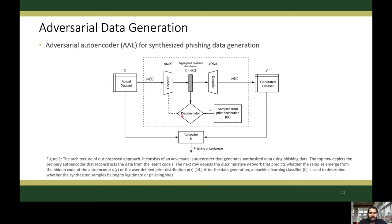The middle row shows the discriminative network that predicts whether the samples emerge from the hidden code or from the user-defined prior distribution. After the training process, the decoder defines a deep generative model that maps the prior distribution and generates data samples from the prior and the decoding distribution. Therefore, the adversarial network is capable of generating data similar to the actual phishing data. The bottom row shows the machine learning classifier used to determine whether the synthesized samples belong to legitimate or phishing sites.